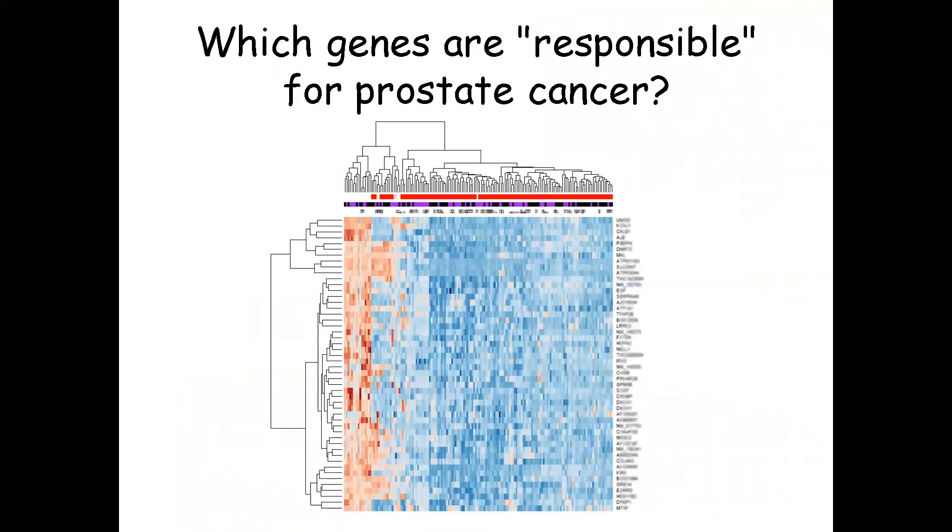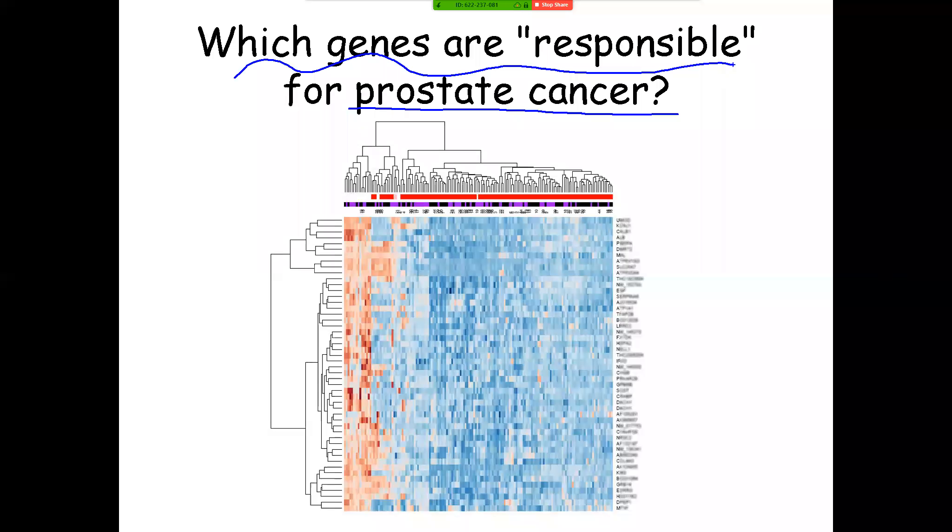A common type of experiment that biomedical researchers do is take a collection of samples that have a disease and compare them with another collection of samples that are normal and identify the cause of the disease or identify what is different between these two sets of samples. In this example, I am showing a figure that represents samples collected for a prostate cancer study. And the question that we are trying to address is which genes are responsible for prostate cancer?